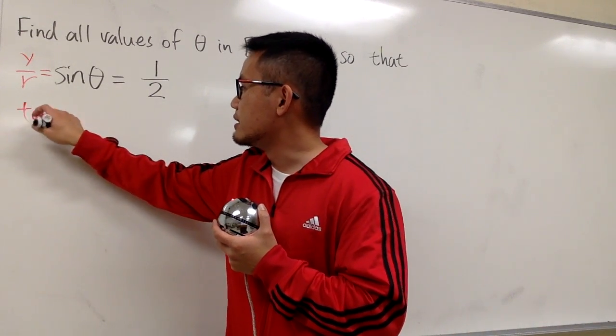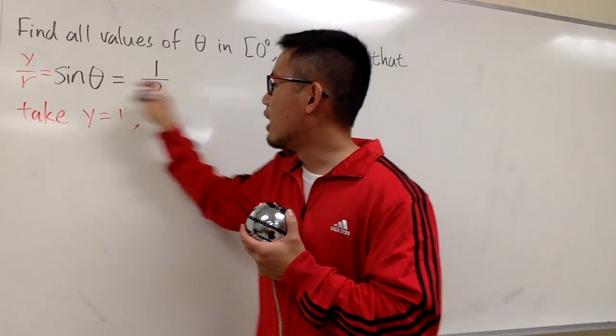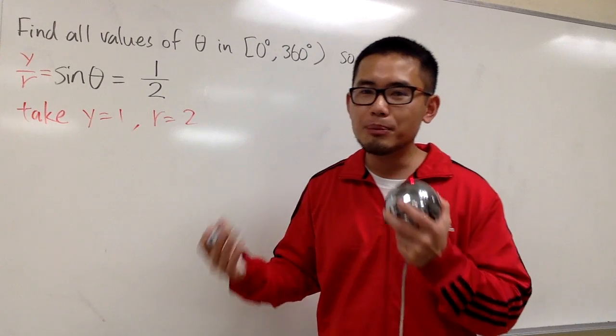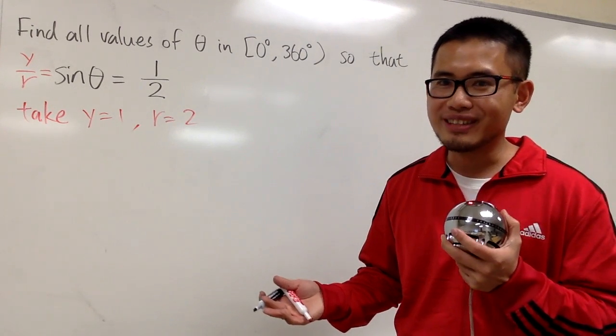In this case, let's take y equals 1 and r equals 2. From here, I'll be able to draw a picture for you, and we'll use a special right triangle, you'll see.